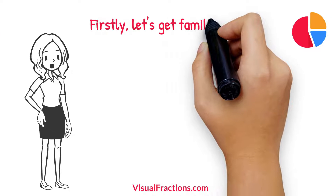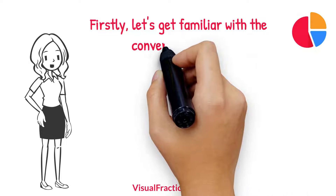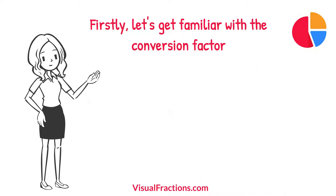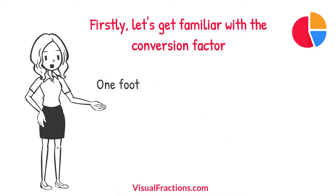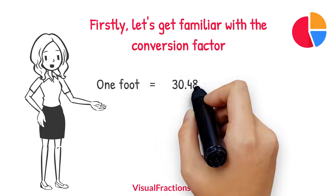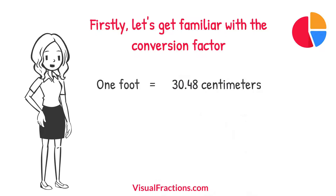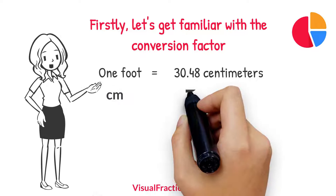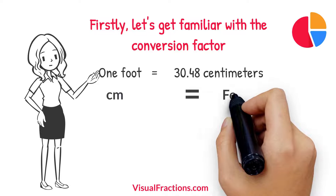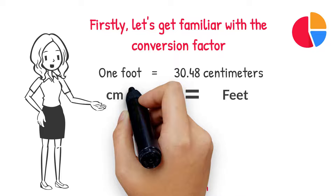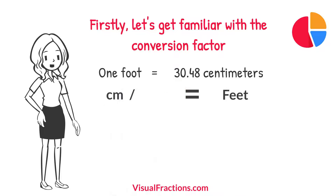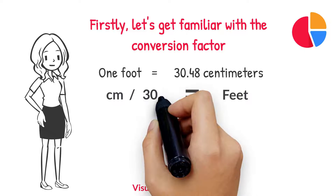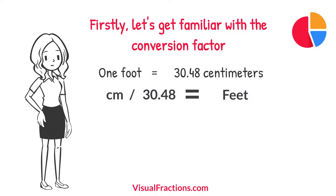Firstly, let's get familiar with the conversion factor. One foot is equivalent to 30.48 centimeters. To convert from centimeters to feet, you simply divide the number of centimeters by this conversion factor.